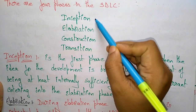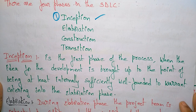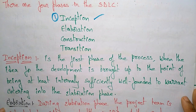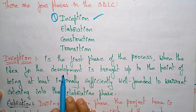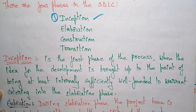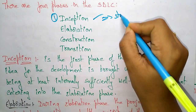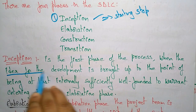Inception is the first phase of the software development life cycle. This is the first phase of the process when the idea for development is brought up to the point of being at least internally sufficiently well-founded to warrant entering into the Elaboration phase. In inception, the starting step is to gather all internal information sufficient for moving forward.